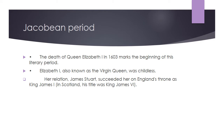The death of Queen Elizabeth I in 1603 marks the beginning of this literary period. Elizabeth I, also known as the Virgin Queen, was childless. Her relation, James George, succeeded her on England's throne as King James I. In Scotland, his title was King James VI.